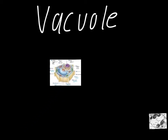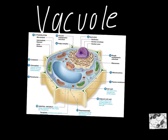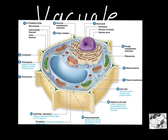This video is all about an organelle called the vacuole. If we look at this diagram of a plant cell, you can see that the vacuole is here in the center. They call it a central vacuole because it's usually somewhere near the middle of the cell.